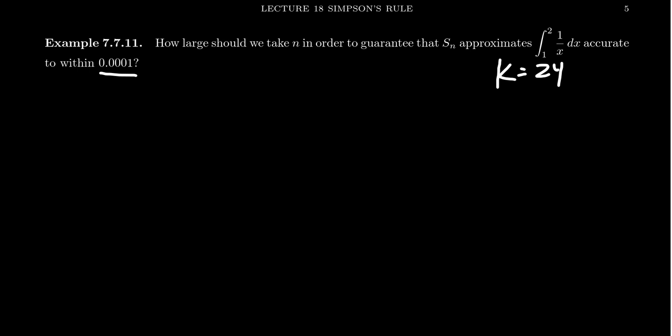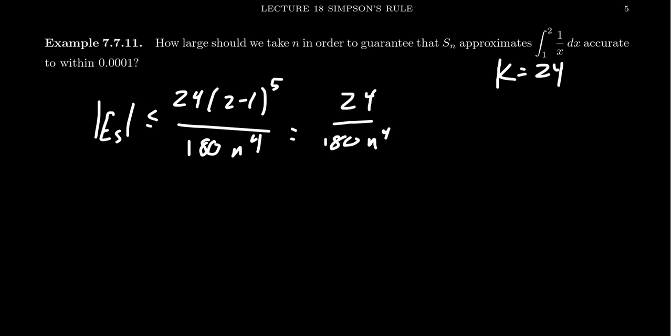And so working with that, let's play around with that error bound. So the error bound is bounded above by 24 is our k value. We're going to get (2 minus 1) to the 5th. That's, again, 1. We're going to get 180 over N to the 4th. So it's that N value that we need to know, 24 over 180N to the 4th. And so we want our error to be 0.0001.